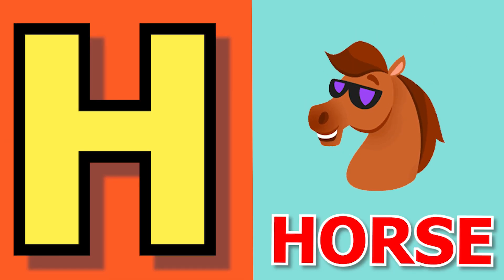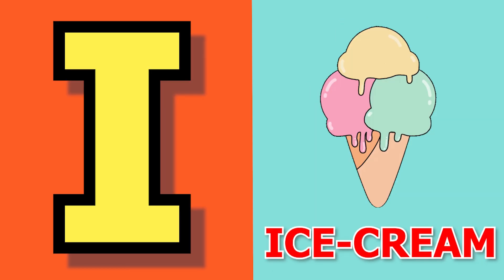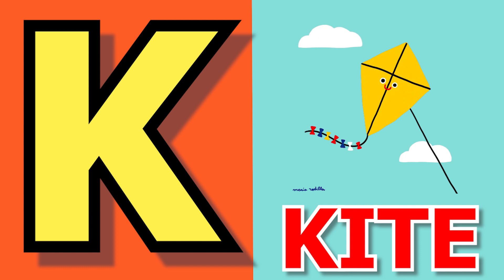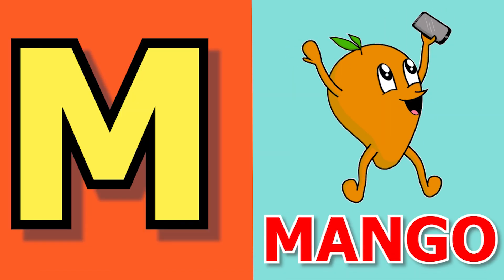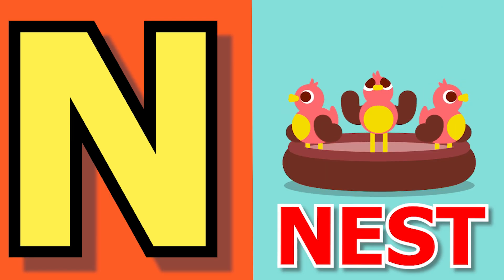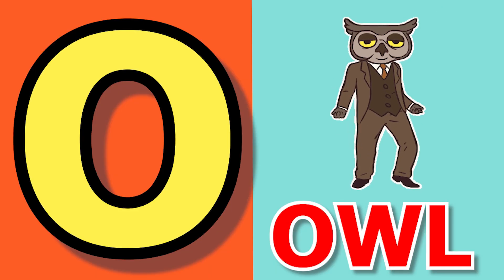H for house, I for ice cream, J for jug, K for kite, L for lion, M for mango, N for nest, O for owl.